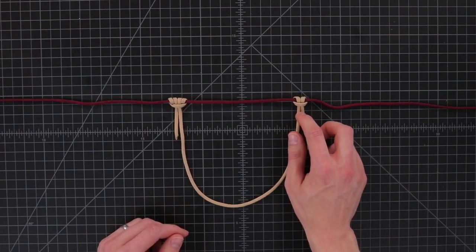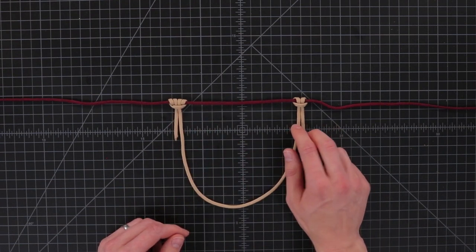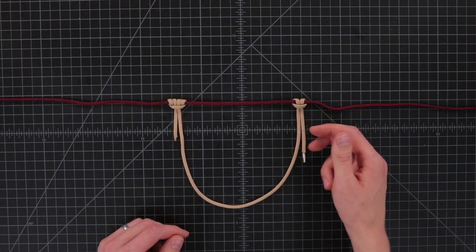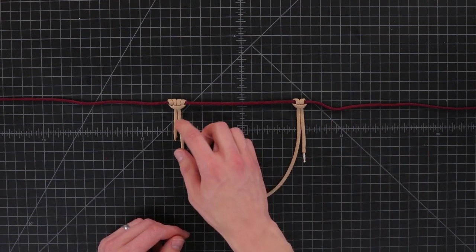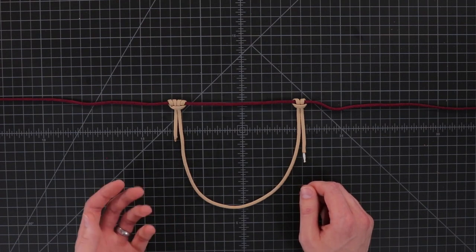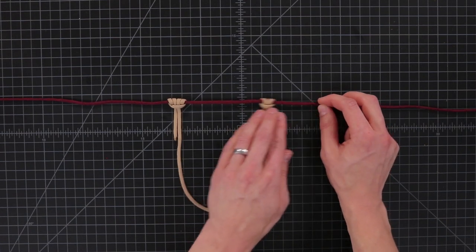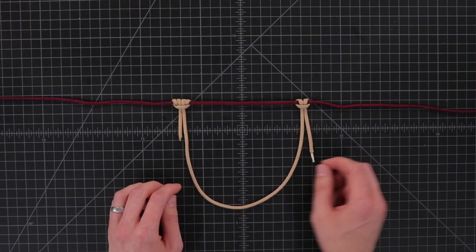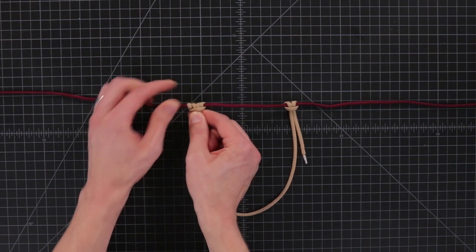Here I've got a cow hitch and a friction hitch. The cow hitch is often used for attaching paracord to a bracelet buckle and the friction hitch is used often in climbing and in tying down loads. The difference between these is that this one slides back and forth easily but this one when it's under tension will grab the rope and will be harder to slide.